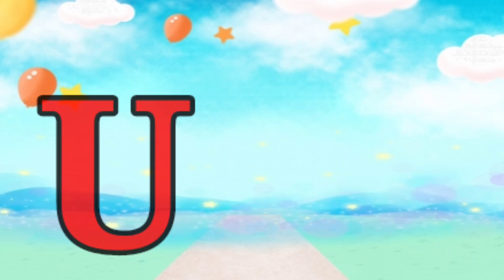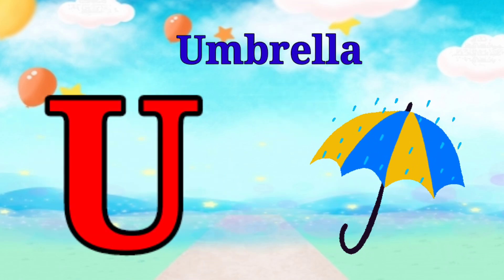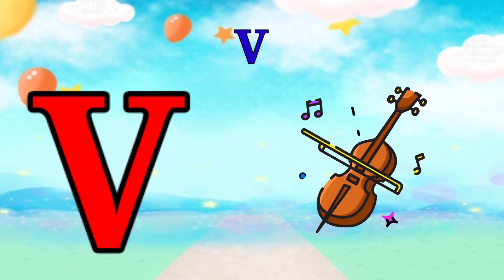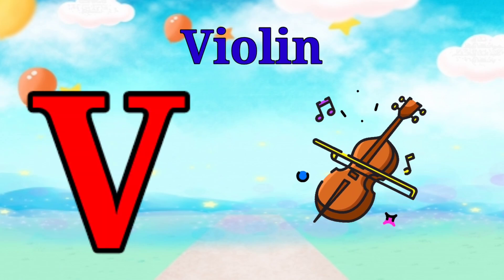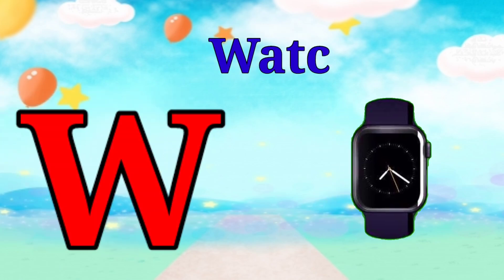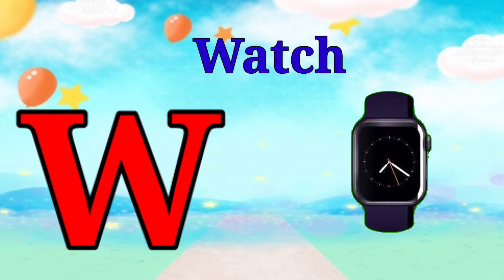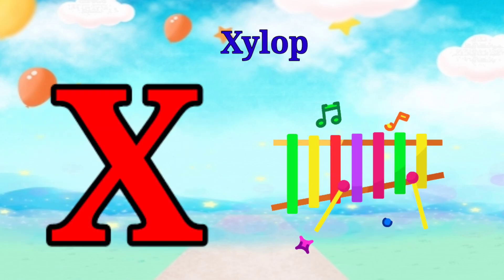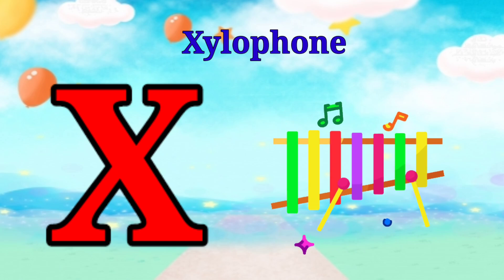U is for umbrella, u-u-umbrella. V is for violin, v-v-violin. W is for watch, w-w-watch. X is for xylophone, z-z-xylophone.